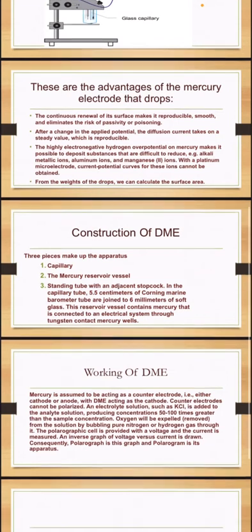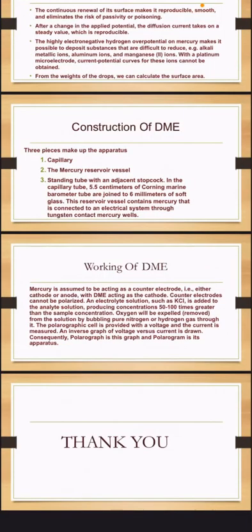Now let's talk about the working of the dropping mercury electrode. Mercury is assumed to be acting as a counter electrode, either as a cathode or anode. Mercury can be assumed in either cathode or anode roles, with the DME acting as a cathode.